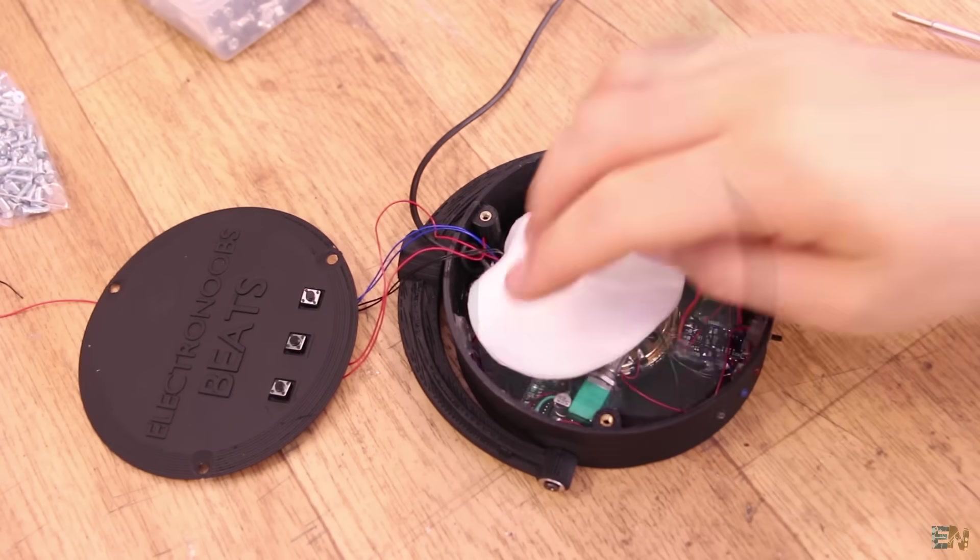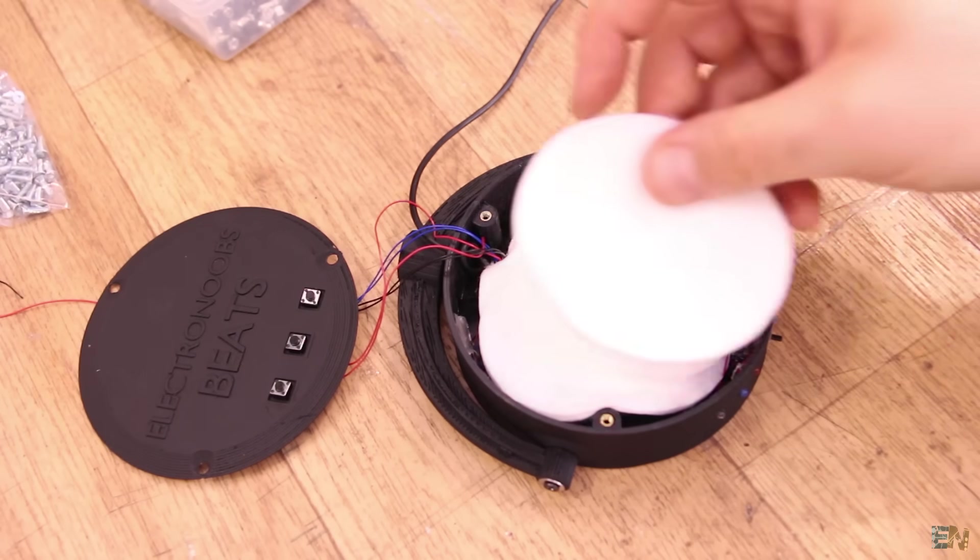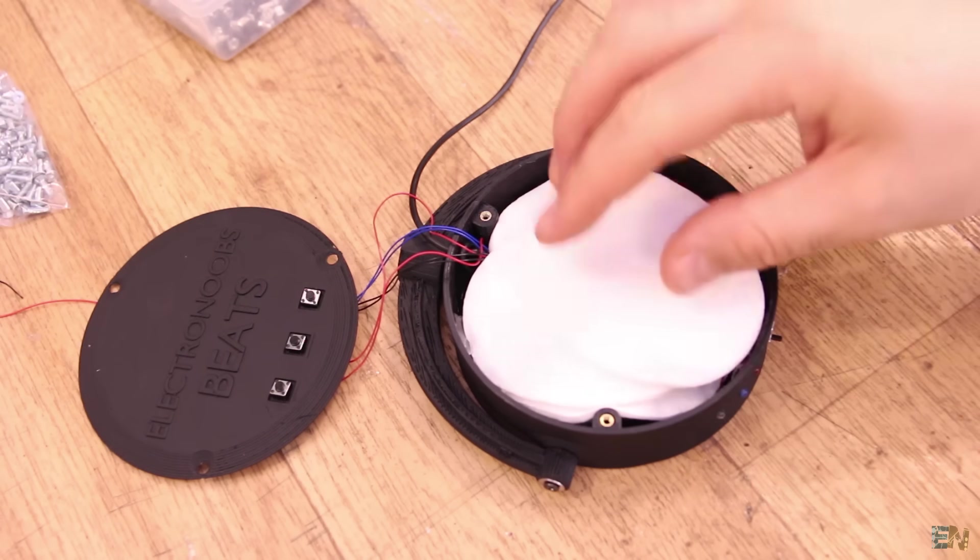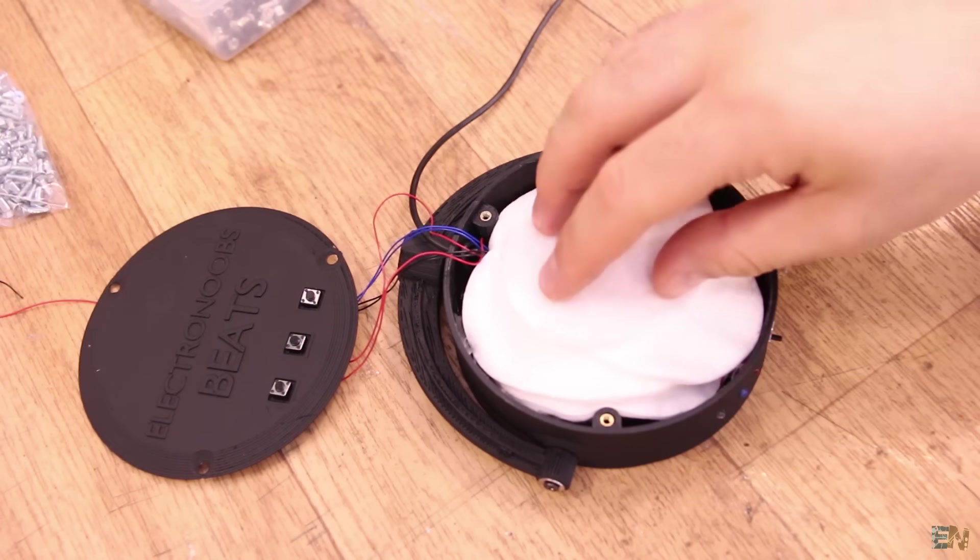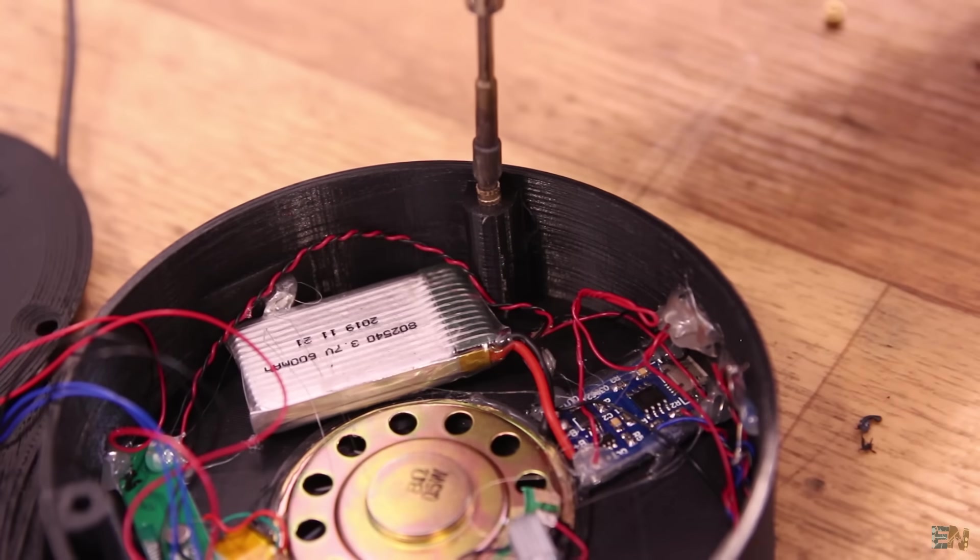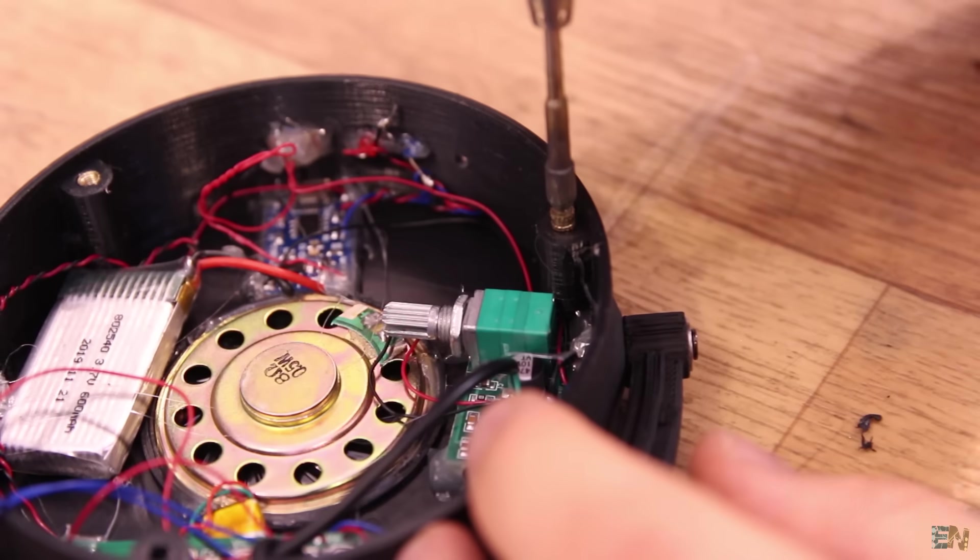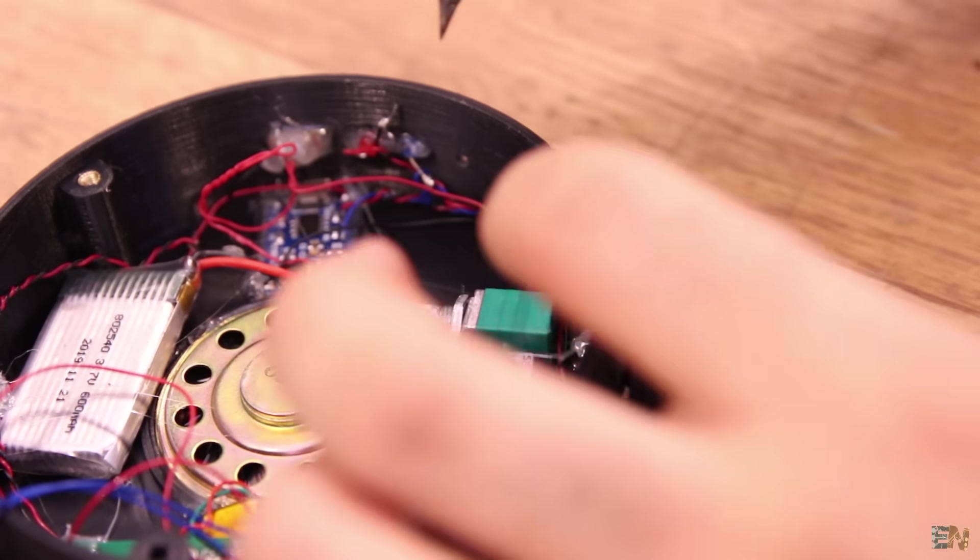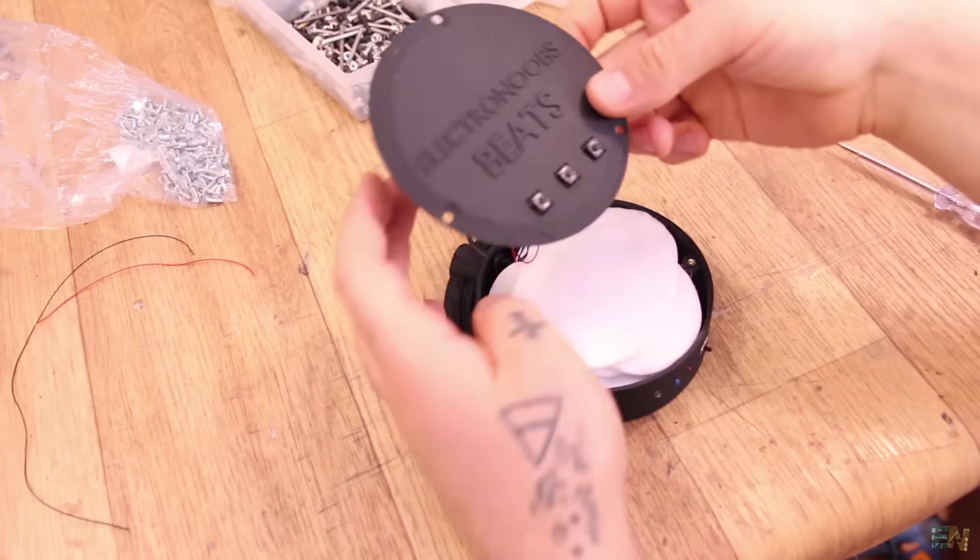Then I fill the entire case with some cotton pads for sound insulation. This will make the speaker sound a lot better. If you have a better material than cotton, use that. At this point you can close the 3D printed case. First I add some brass threads using my soldering iron. Just heat the part and push it inside of the plastic. Then you can close the case using 3 screws.